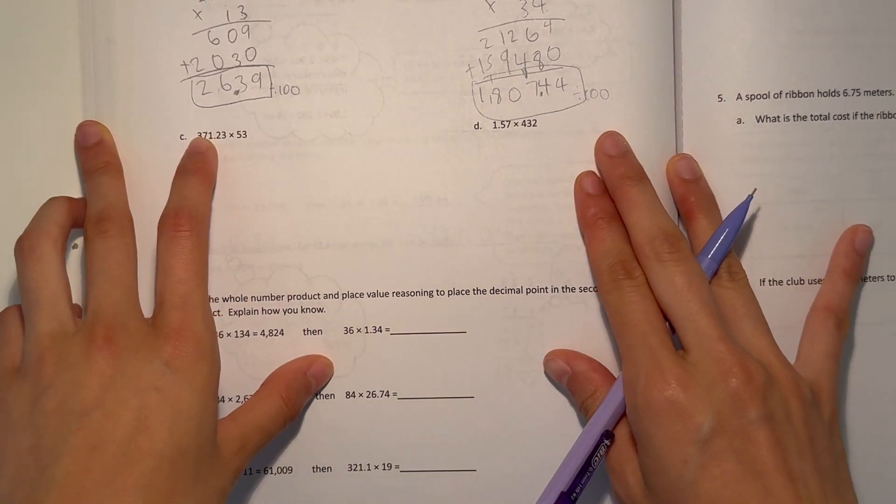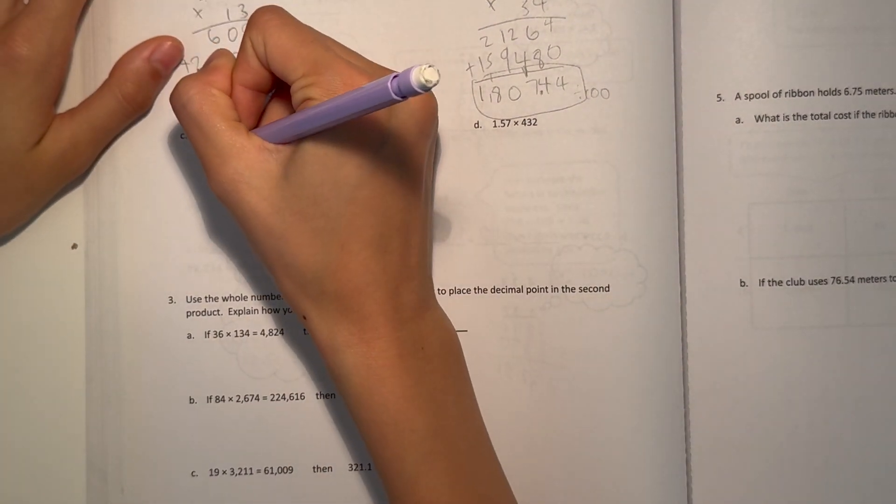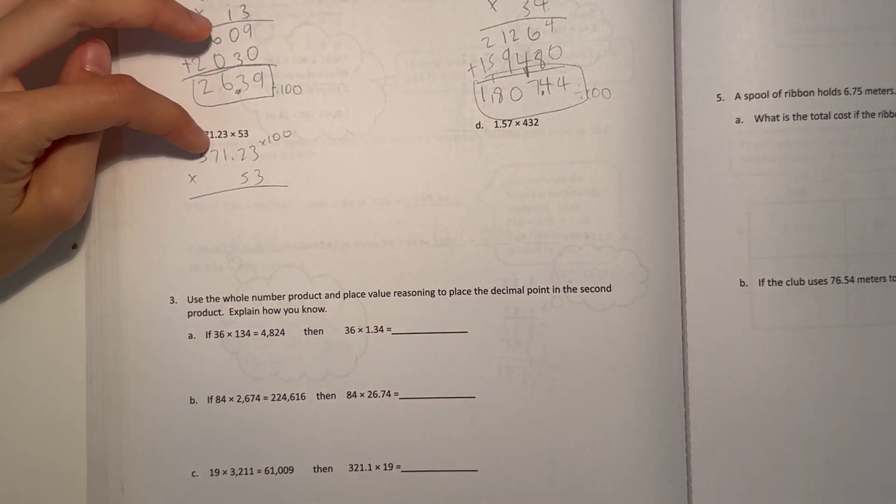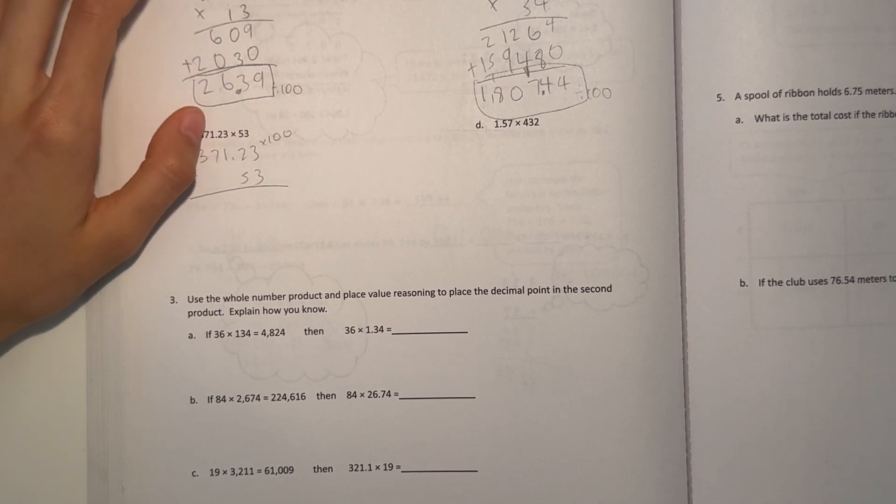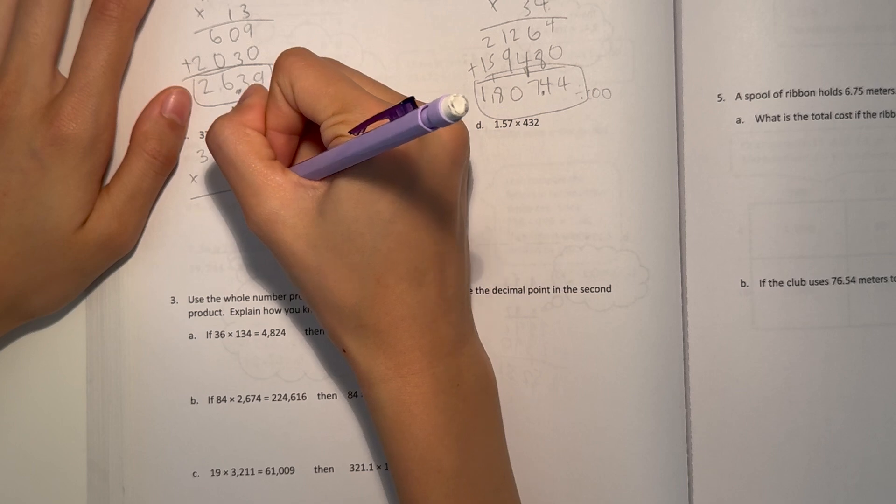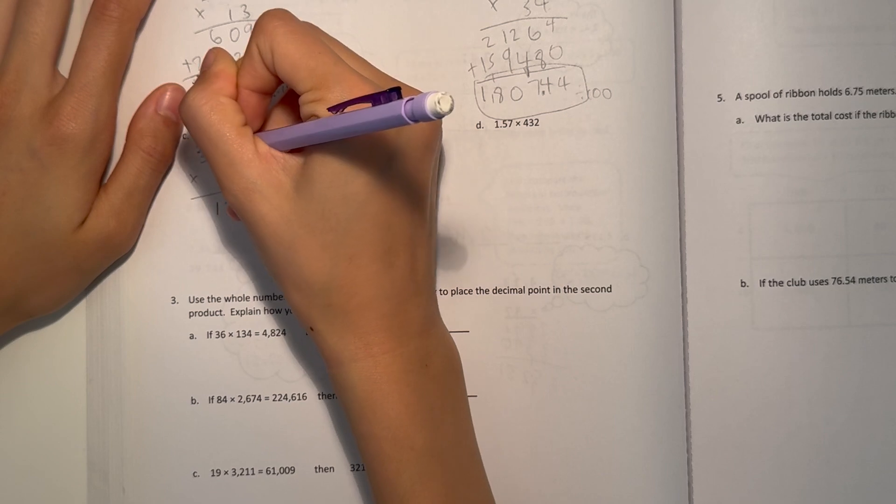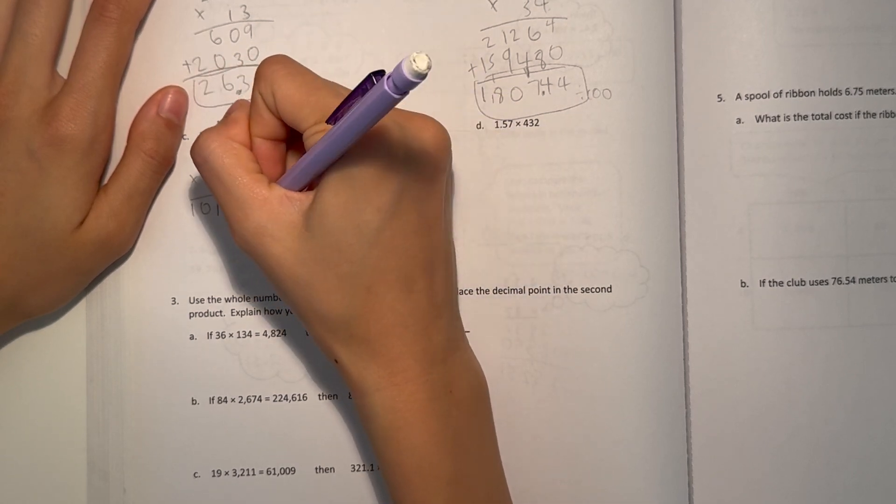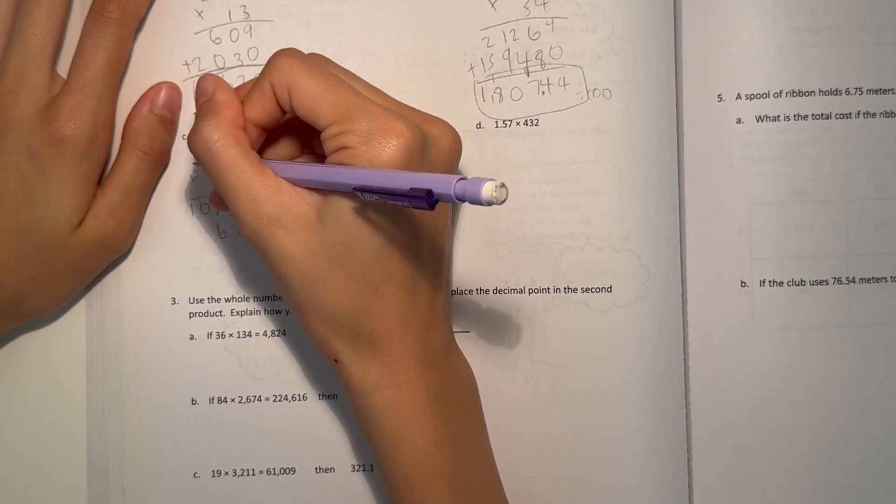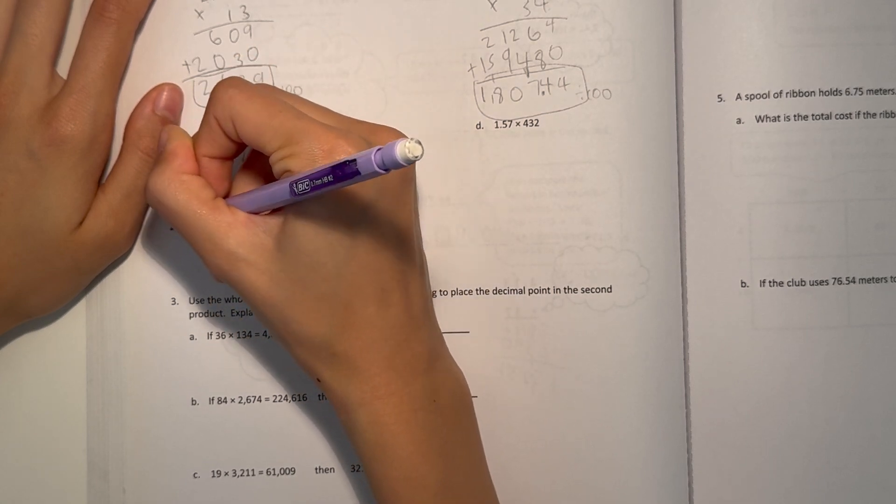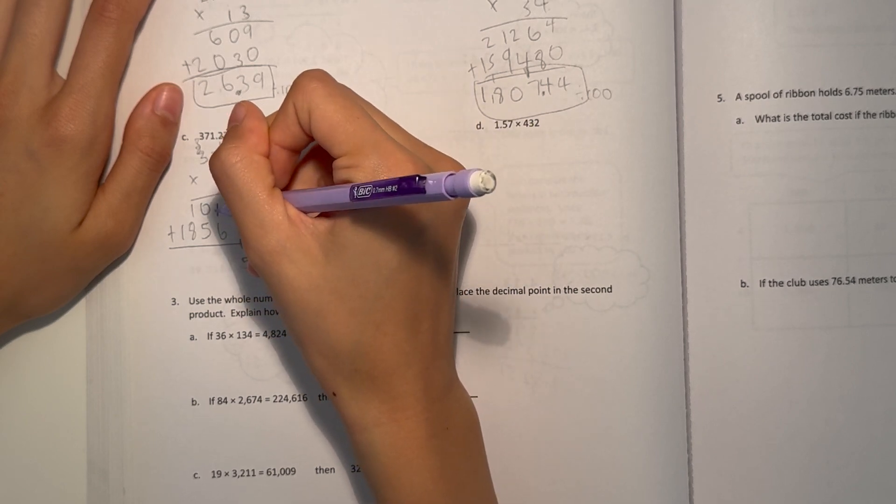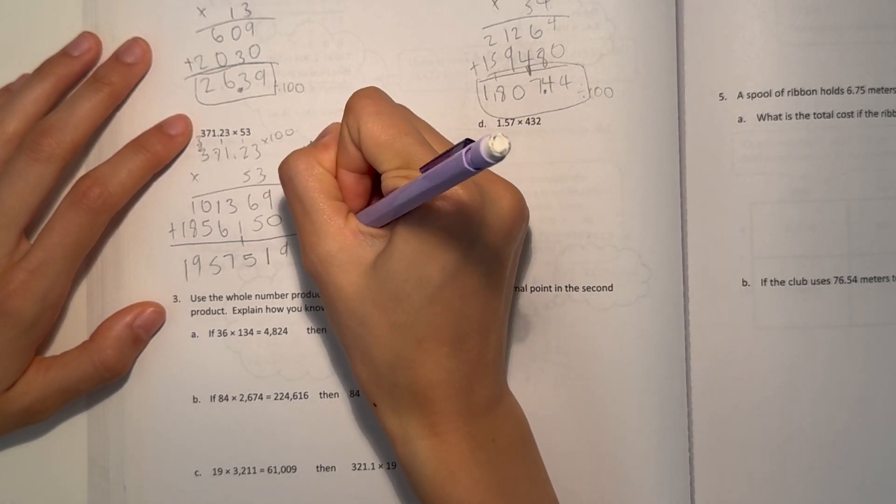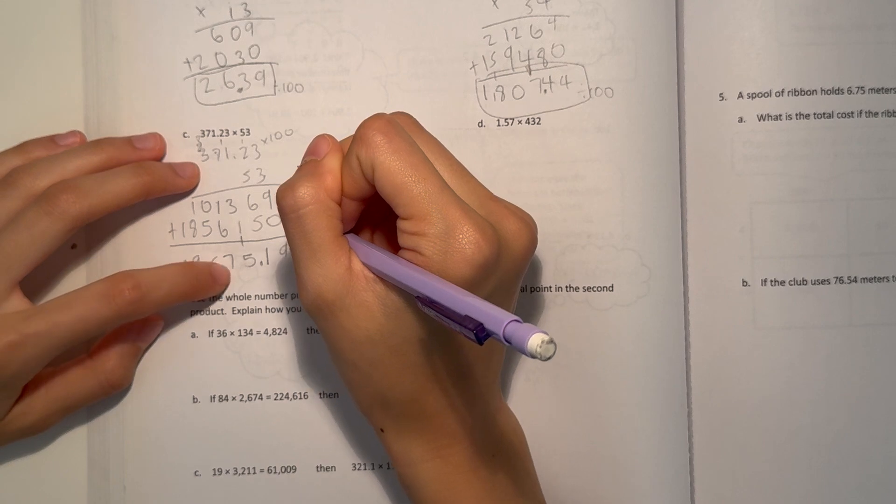And for C, 371.23 times 53. We multiply by 100 to get rid of the decimal point and think of it as 37,123. Let's look at the 3. 3 times 3 is 9, 2 times 3 is 6, 1 times 3 is 3, 7 times 3 is 21, 3 times 3 is 9 plus 1 is 10. Add a 0. 5 times 3 is 15, 5 times 2 is 10 plus 1 is 11, 5 times 1 is 5 plus 1 is 6, 5 times 7 is 35, and 5 times 3 is 15 plus 3 is 18. Now we add: 5, 7, 5. Since we multiplied by 100, now we divide by 100, which will give us 19,575.19.